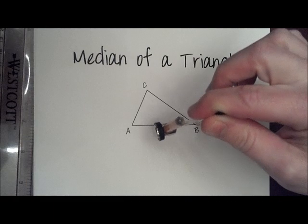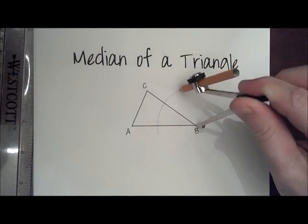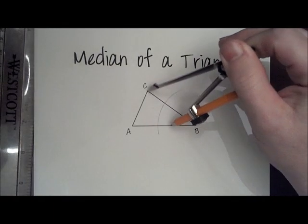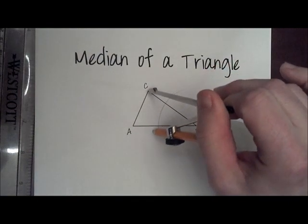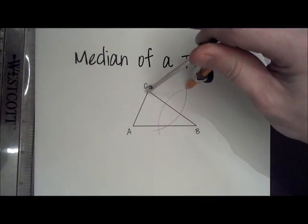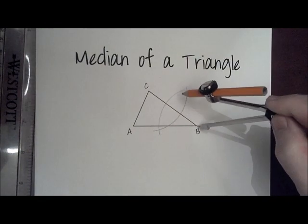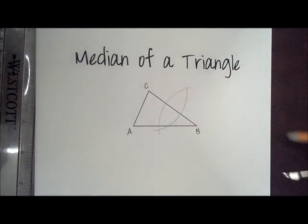Since I asked you to construct it from A to side CB, I'm going to create a football on side CB, making sure that my compass was open more than half the distance of the segment. I need to make that just a hair longer.